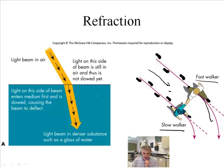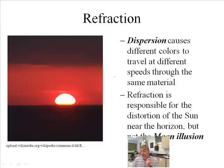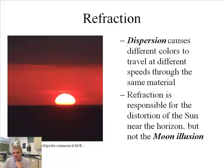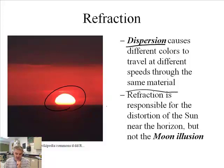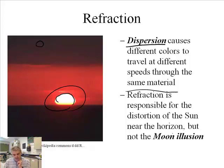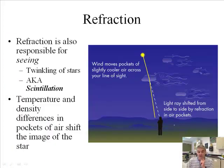Refraction also causes something called dispersion, where different colors travel at different speeds through the same material. Light is being dispersed as it comes through the atmosphere, and this is responsible for the distortion of the sun near the horizon — the sun looks much larger there than when it's higher in the sky. It isn't actually bigger; it's being distorted by refraction. By the way, this is not responsible for the moon illusion when you see the harvest moon.